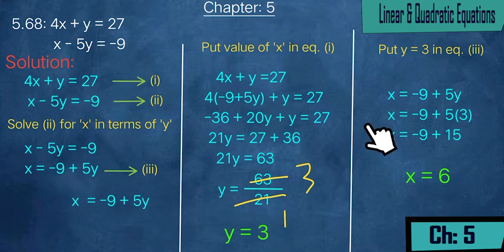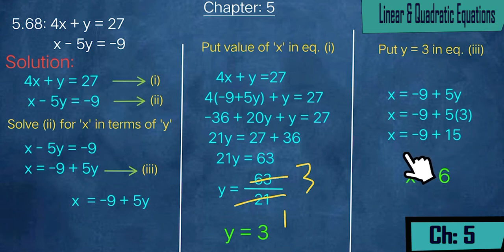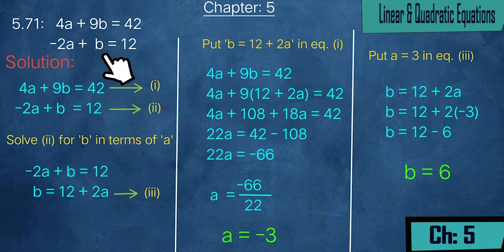So x = 6 and y = 3 for exercise 5.68. Next we have exercise 5.71: 4a + 9b = 42 and -2a + b = 12, labeled equation 1 and equation 2. We solve equation 2 for b in terms of a: shifting -2a gives b = 12 + 2a, which we call equation 3.